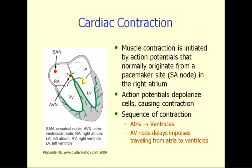The sequence of contraction is that the first tissues to undergo depolarization are found in the right and left atrial muscles. So these muscles will contract first within these two chambers. Following a brief time delay, we will then see that the ventricular muscle itself will undergo contraction.